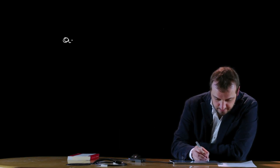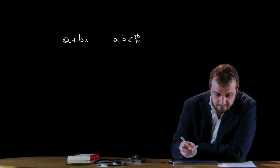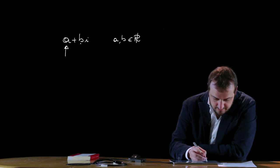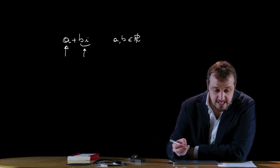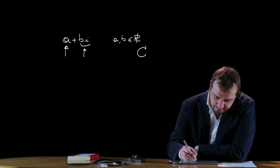After introducing imaginary numbers, we now look at complex numbers proper. A complex number is defined as the sum of a real number and an imaginary number — for example, A + Bi, with A and B belonging to the real numbers. A is called the real part of the complex number; Bi is called the imaginary part. The set of complex numbers, as introduced in the first lesson, is denoted by the letter C.